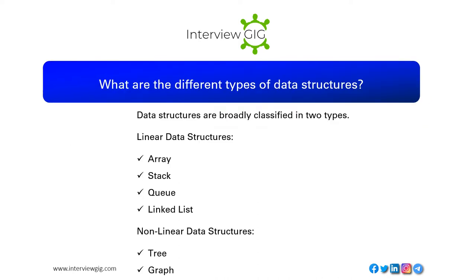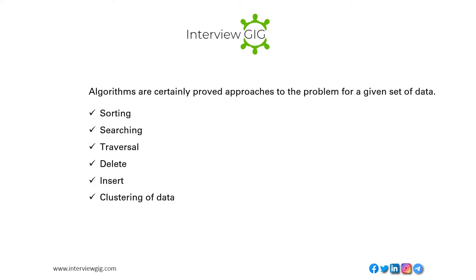What are the different types of data structures? Data structures are broadly classified into two types: linear data structures — array, stack, queue, linked list — and non-linear data structures — tree and graph. Algorithms are certainly proved approaches to a problem for a given set of data.